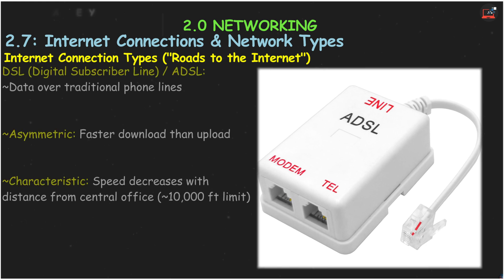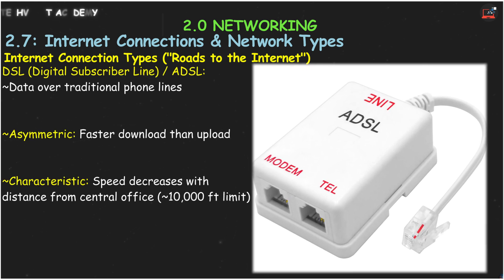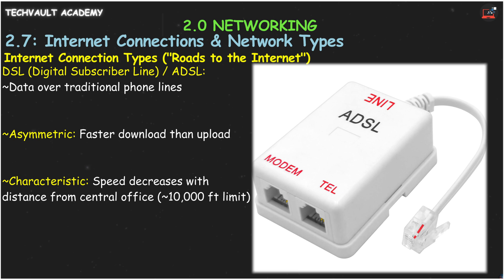DSL, Digital Subscriber Line, often called ADSL, uses your existing telephone lines. It's asymmetric, meaning download speeds are usually much faster than upload speeds. A key characteristic is that DSL speed decreases the farther you are from the phone company's central office, typically best within about 10,000 feet.